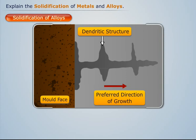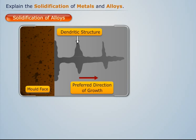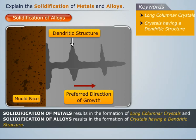Note that during solidification of alloys, the transition from liquid to solid state occurs during the change in temperature. This can be represented graphically as shown. Thus we can say that solidification of metal results in the formation of long columnar crystals, and solidification of alloy results in the formation of crystals having a dendritic structure.